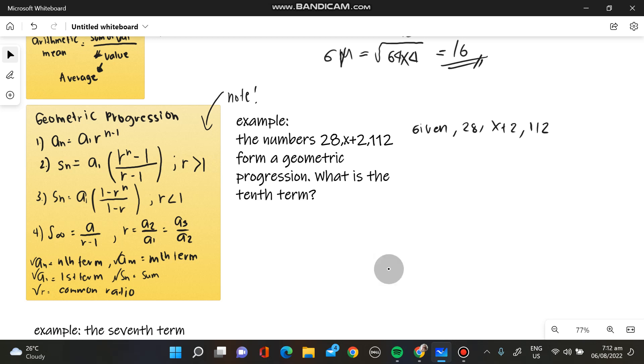So in our formula, it says here that R is equivalent to A sub 2 over A sub 1. Also, R is equivalent to A sub 3 over A sub 2. So by substituting, this will be our A sub 1, A sub 2, and A sub 3.